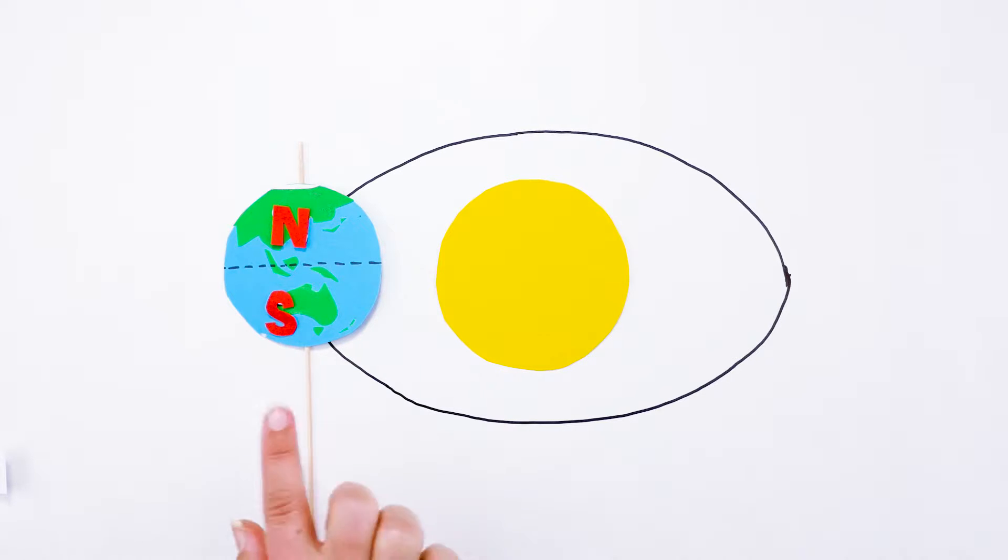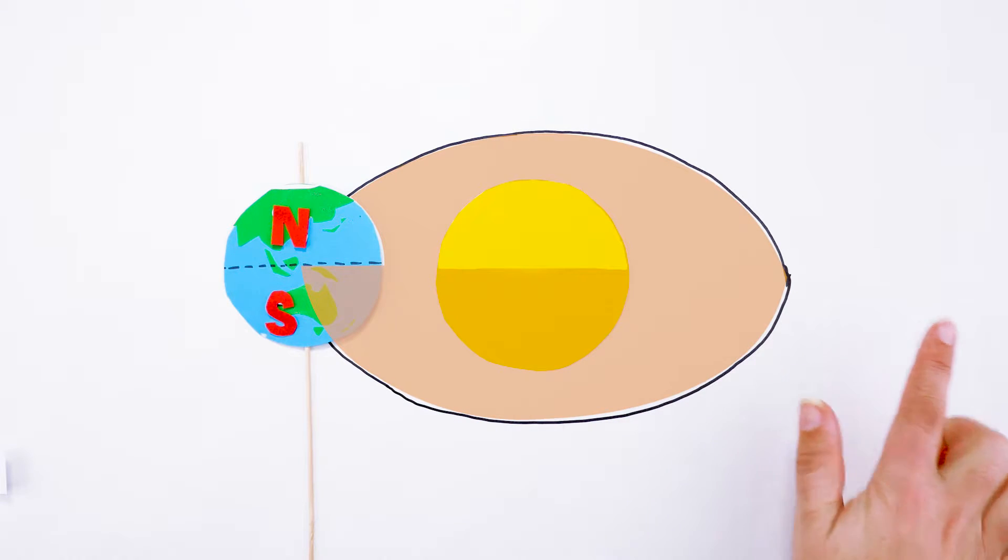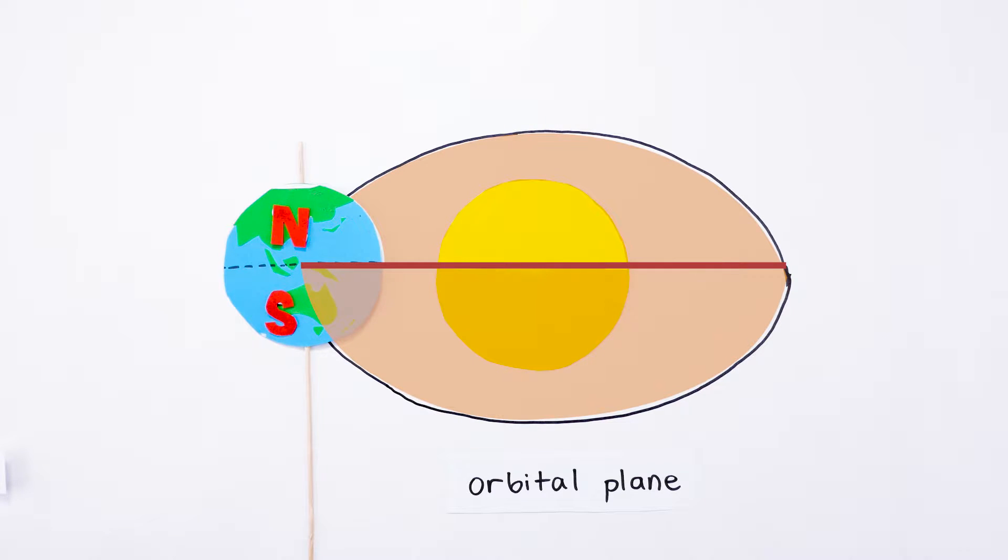Think about the path of the Earth as it orbits the Sun. Now imagine a flat area inside the ellipse. We call that the orbital plane. Looking from the side we think of the Earth's axis as going straight up and down at a right angle with the orbital plane.